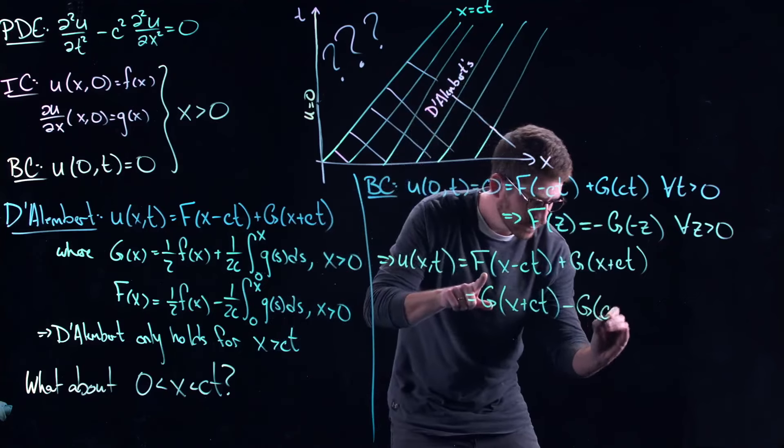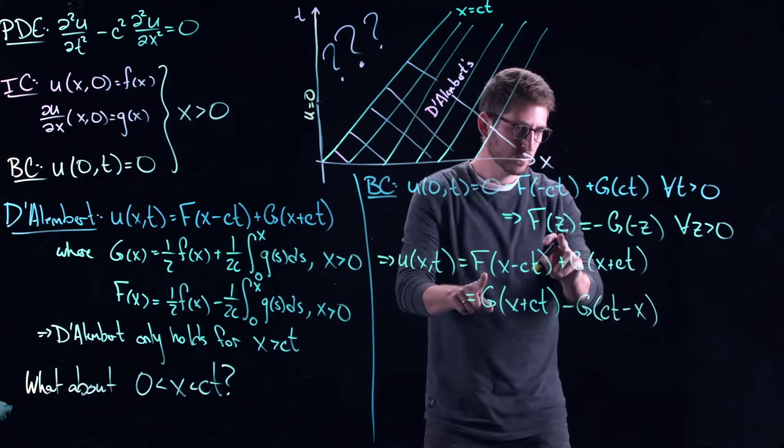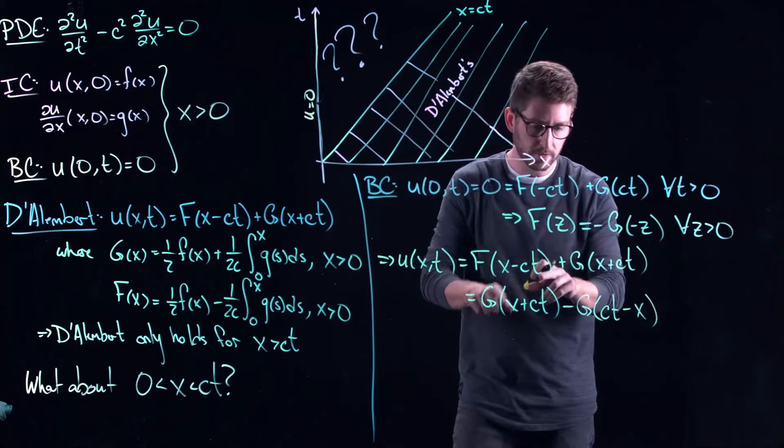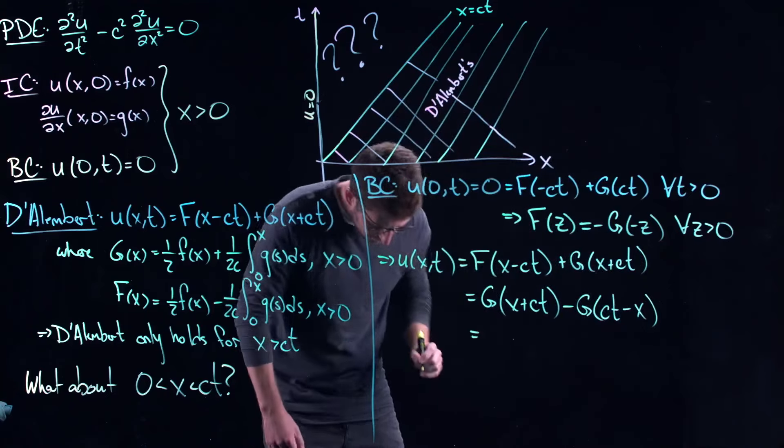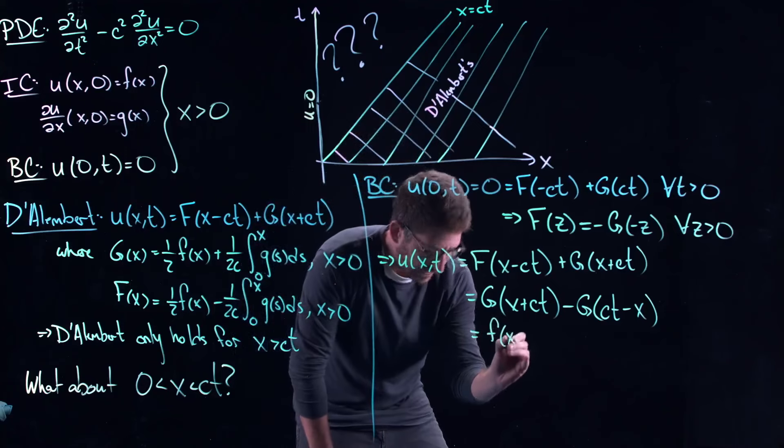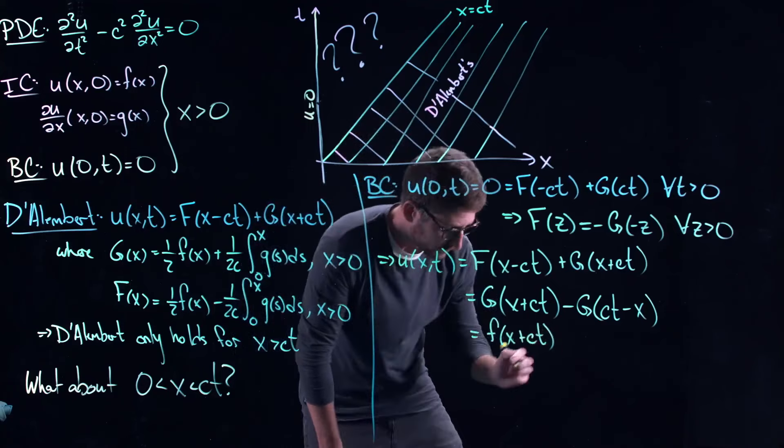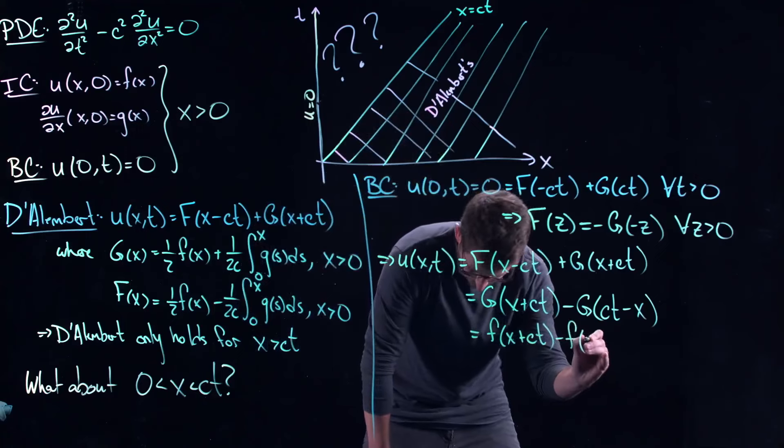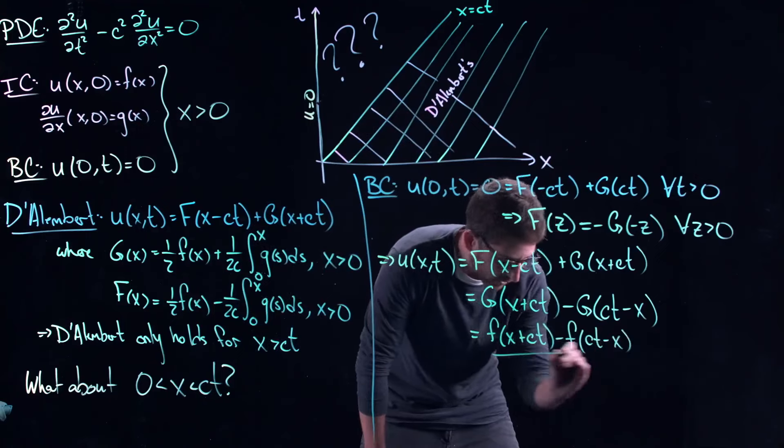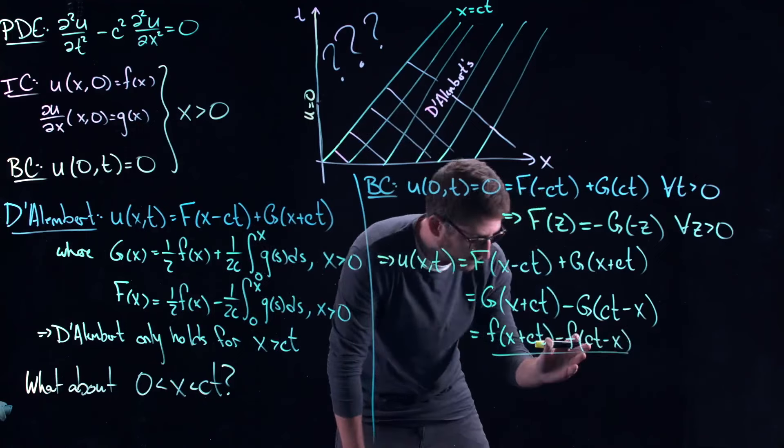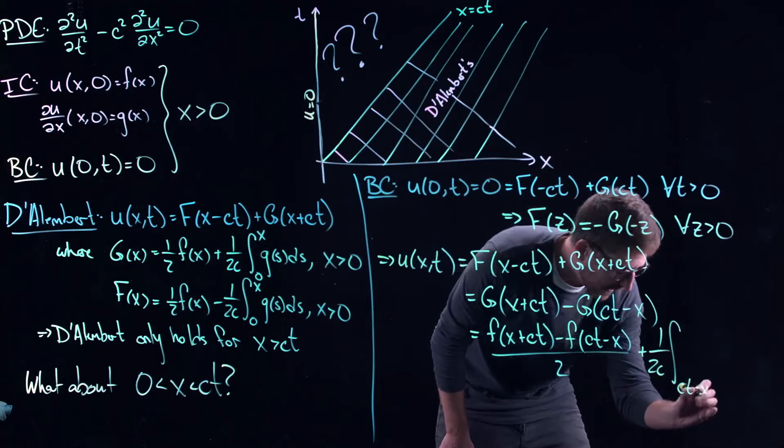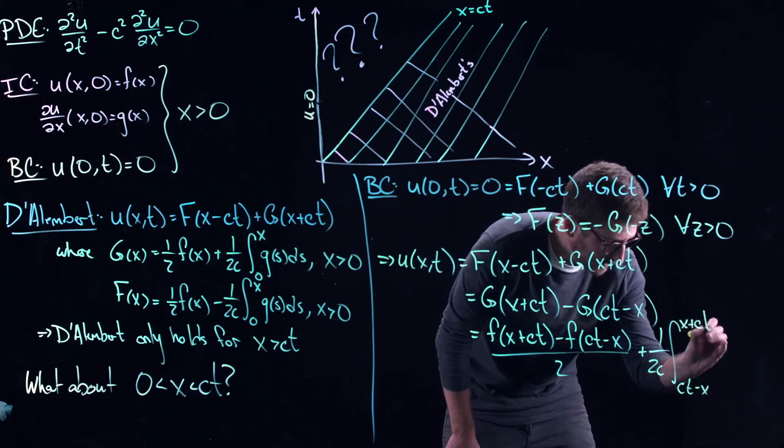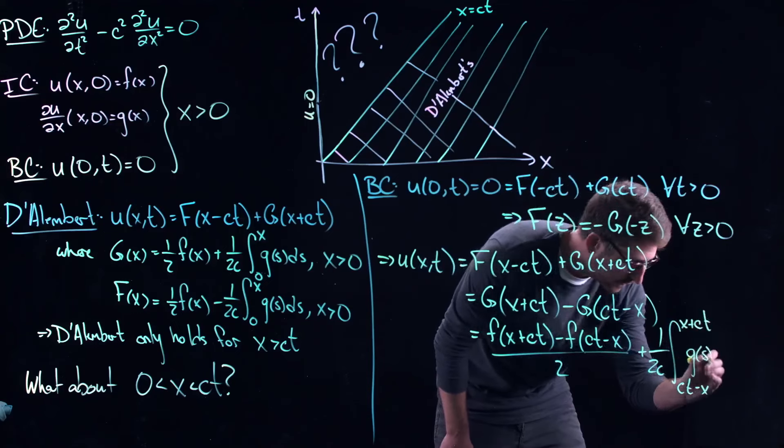Well, this tells us that my solution to my partial differential equation is going to look like f of x minus ct plus g of x plus ct, which is actually equal to g of x plus ct, that's this piece over here, and then this I'm going to replace using this right here, is minus g of ct minus x. Right? So just from this formula right here, I can replace. Everything is now written in terms of g. And from D'Alembert's solution, this gives me f of x plus ct, and then minus f of ct minus x. Now look at all of the arguments are positive now, so we don't have to worry about any issues with x being positive. Plus 1 over 2c, integral from ct minus x to x plus ct of g of s ds.